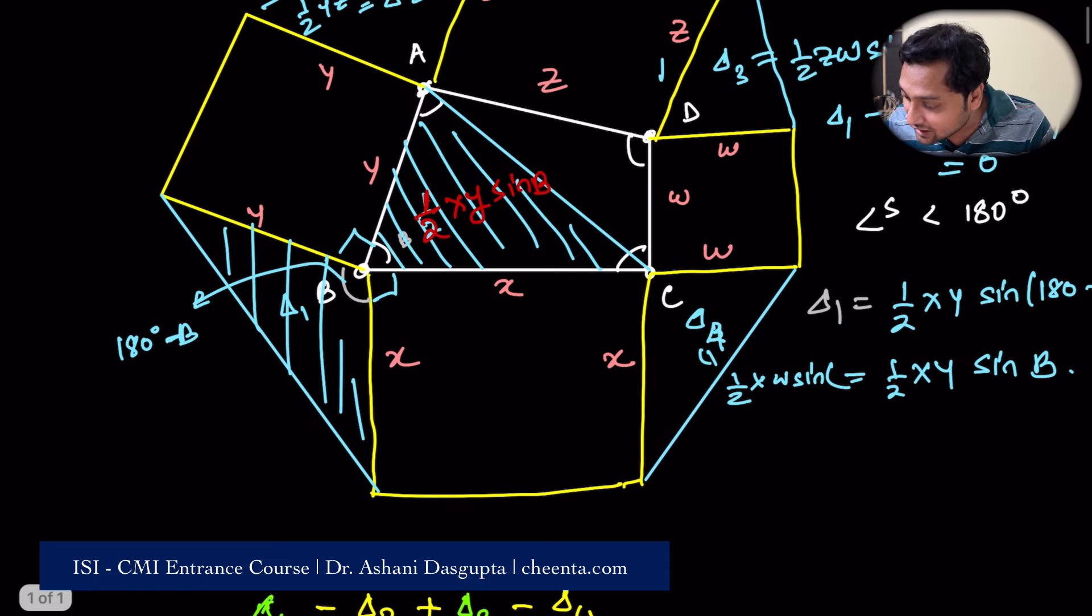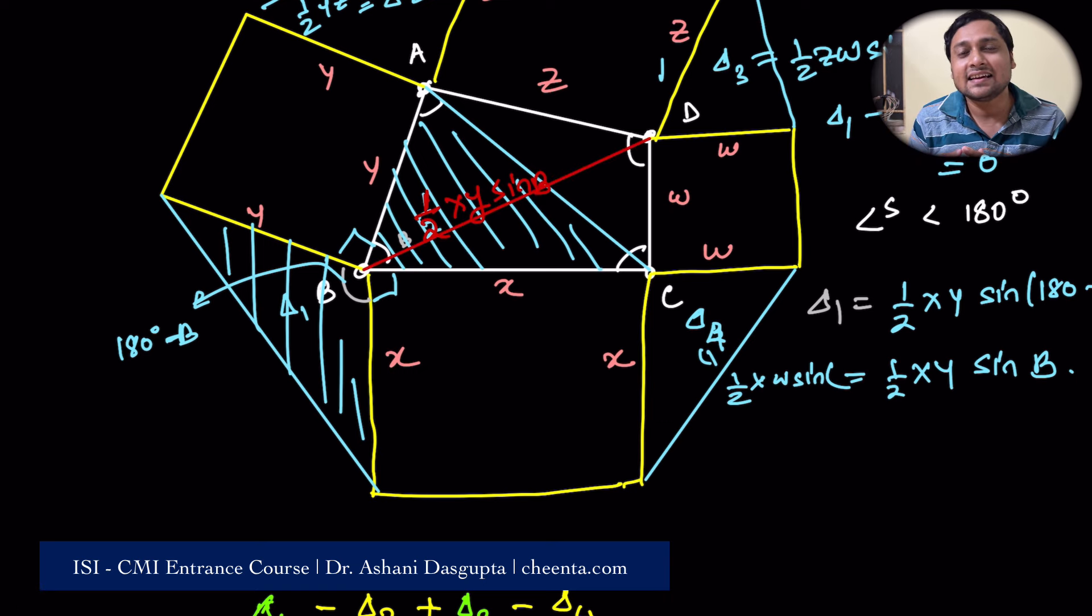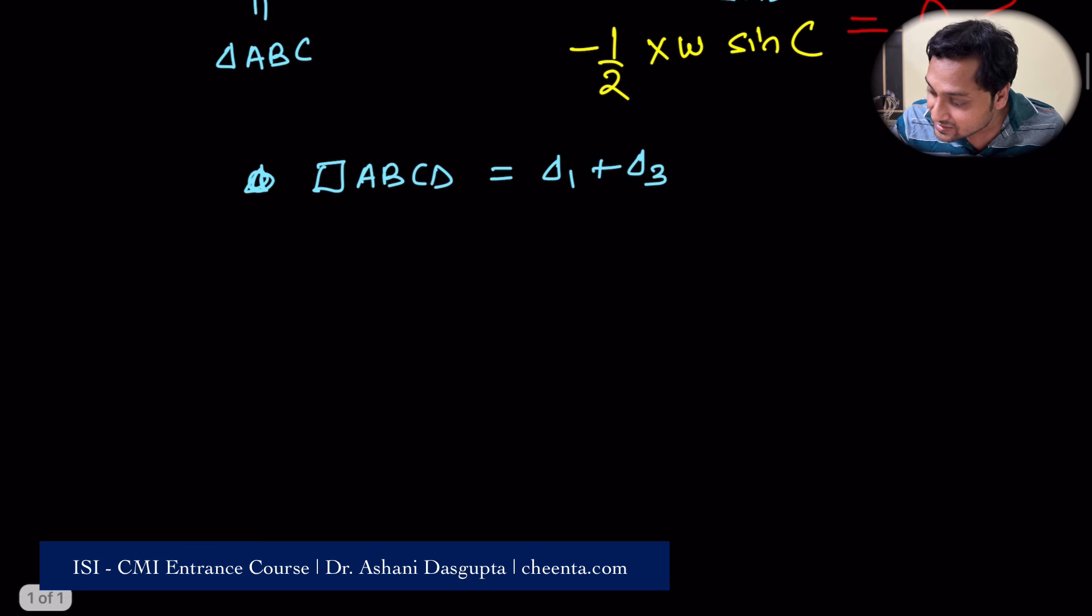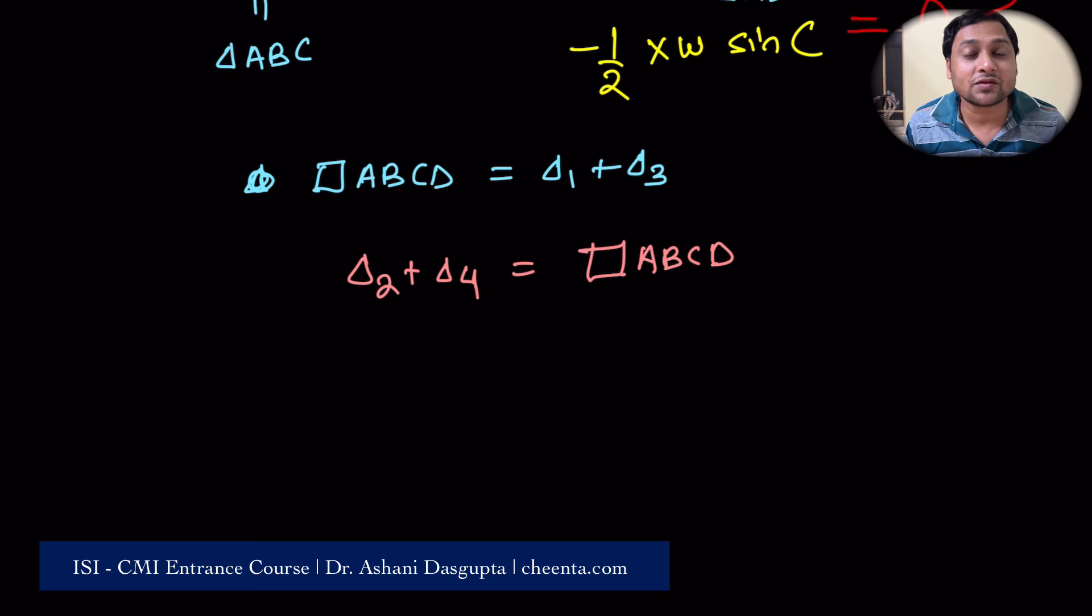And if you draw the other diagonal, if I draw the other diagonal, I get exactly the area of the quadrilateral in the other way. So delta 1, delta 2 plus delta 4 is also quadrilateral ABCD. So of course, if you subtract them, they would give you zero. And we are done. Isn't this beautiful? Beautiful.